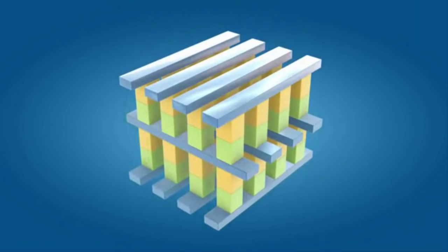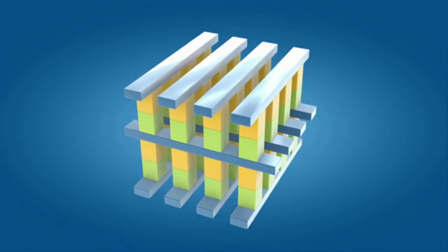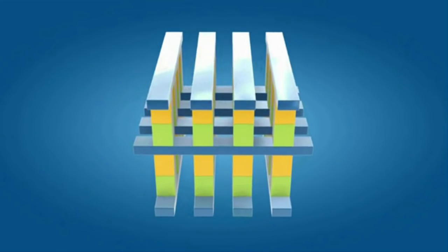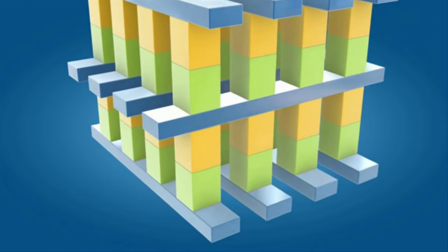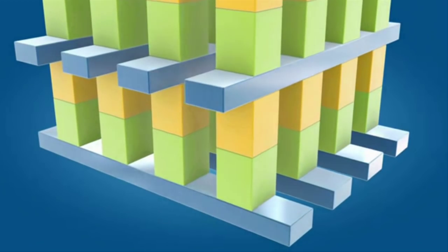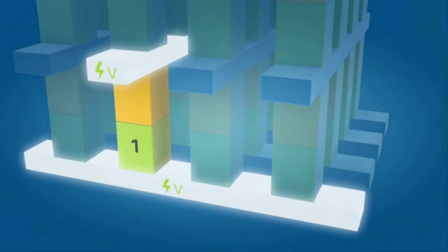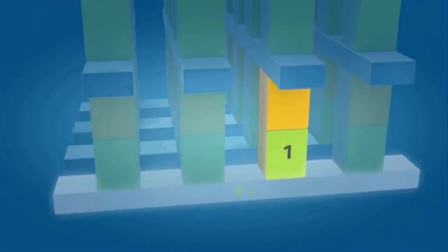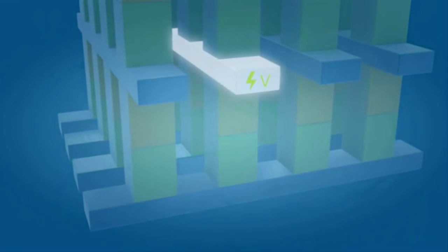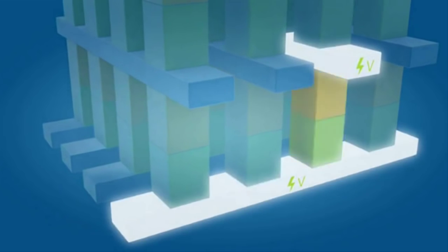We can stack these memory grids three-dimensionally to maximize density. And whereas DRAM requires a transistor at each memory cell to access or modify the cell, making DRAM big and expensive, each 3D Crosspoint memory cell can be written to or read by simply varying the voltage sent to its selector, completely eliminating the need for transistors.